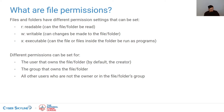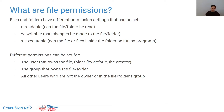You can set those permissions for three different groups. One is the set of permissions for the user that owns the file. There's a set of permissions for the group that owns the file, so multiple users can share the same permissions. And then there are all other users on the system who are not the user owner or the group owner.